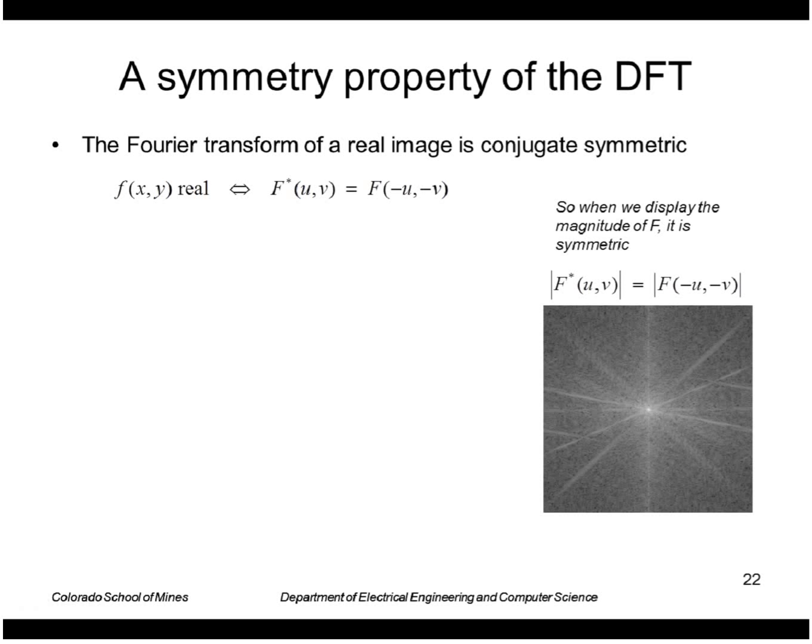Some properties of the discrete Fourier transform, one is, as we've kind of seen already, that the spectra look very symmetrical. And that comes from the fact that a real function, f of x, y, yields a transform that is symmetrical, the complex conjugate is symmetrical.